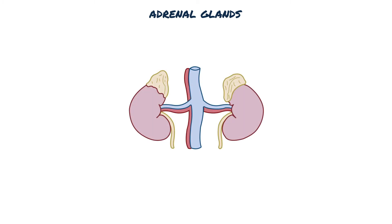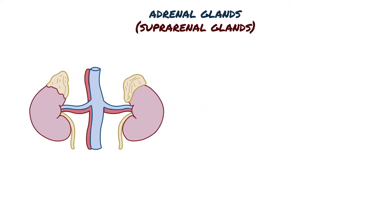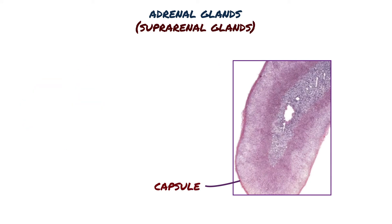The adrenal glands, also known as suprarenal glands, are found immediately superior to the kidneys. The adrenal glands are covered by a capsule made of thick connective tissue. They are retroperitoneal structures and composed of two major regions: the outer adrenal cortex and the inner adrenal medulla.